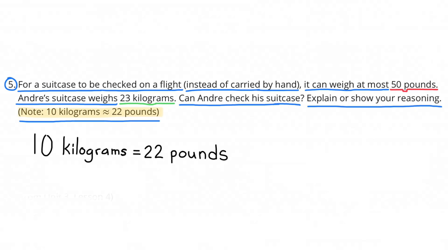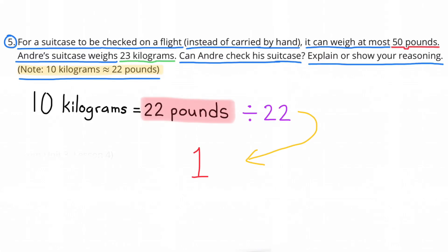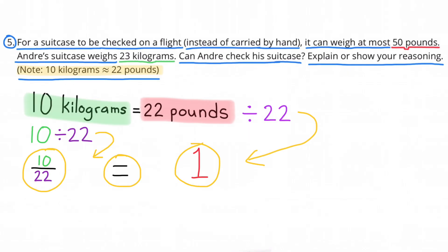Since 10 kilograms weighs about 22 pounds, and the suitcase can weigh at most 50 pounds, I need to convert. First, I find 1 pound: 22 pounds divided by 22 equals 1 pound, and since I divided by 22, I also divide the kilograms by 22, giving 10 over 22 kilograms equals 1 pound.